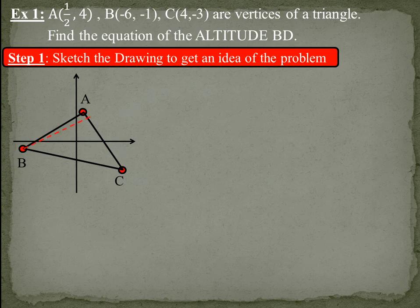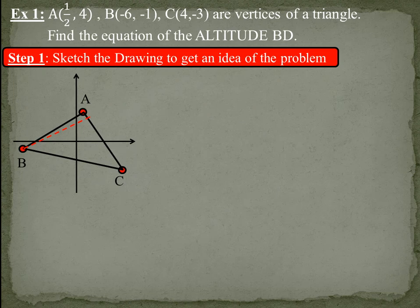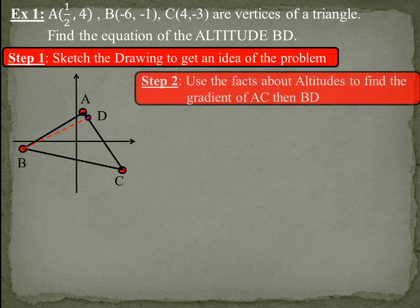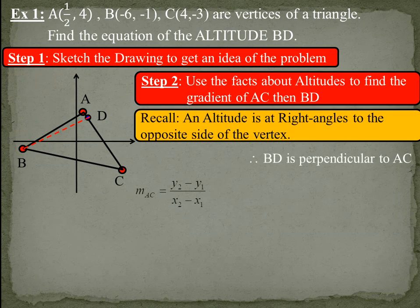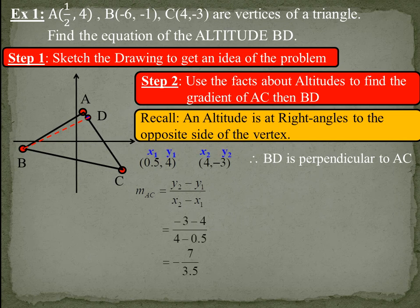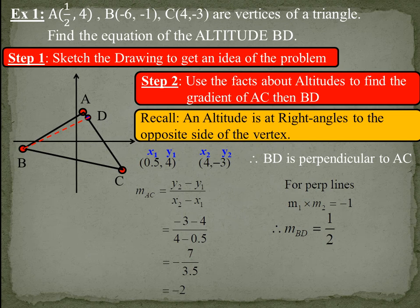So marking in the diagram, marking in roughly BD, you get an idea of what the equation should be. Second step is you would use the fact about altitude to find the gradient of AC, then BD, because an altitude is at right angles to the opposite side. So if you can find the gradient of AC, you can then use the perpendicular gradient theory to be able to find the gradient of BD. Using the formula and coordinates, we end up with a gradient of minus two for AC. From the diagram, it slopes down reasonably steep, so minus two fits. Therefore, from perpendicular lines, the gradient of BD must be a half. Remember, two perpendicular lines, you just flip the gradient and change its sign. In this case, minus two becomes positive a half.